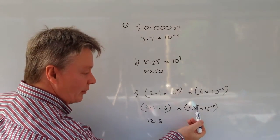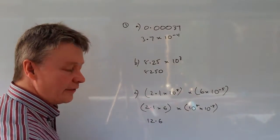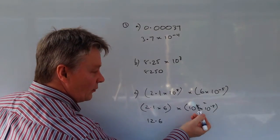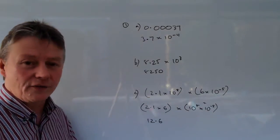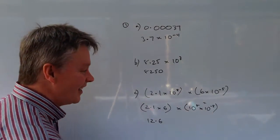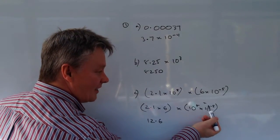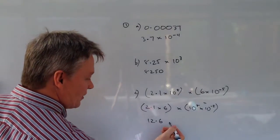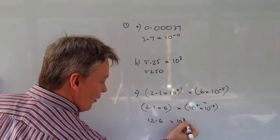Well, 8 plus minus 5. A plus and a minus means a minus, so it would read as 8 minus 5 which is 3. So 12.6 times 10 to the power of 3.